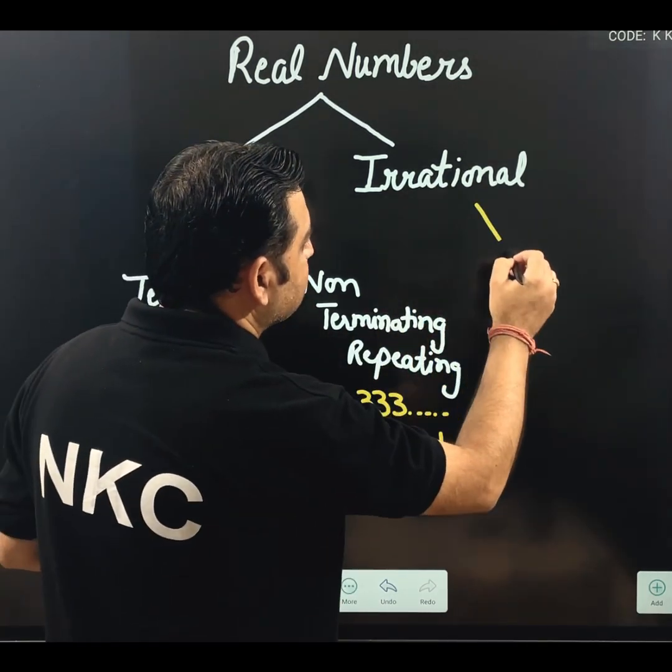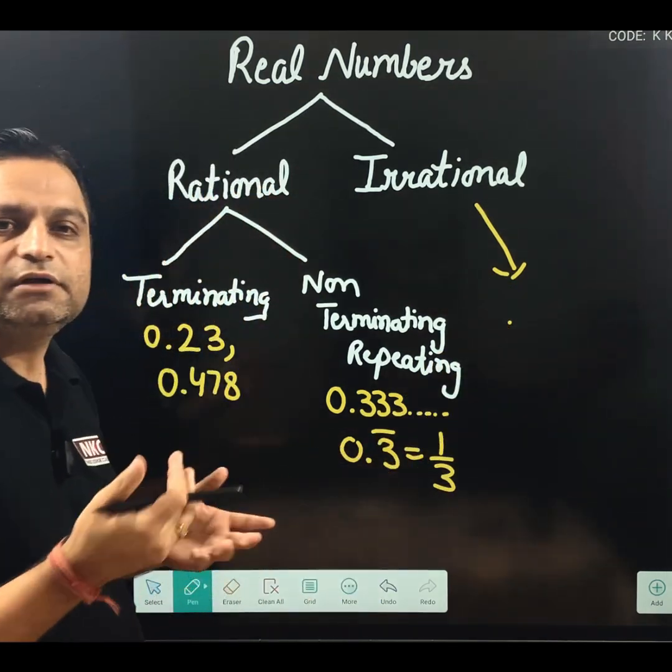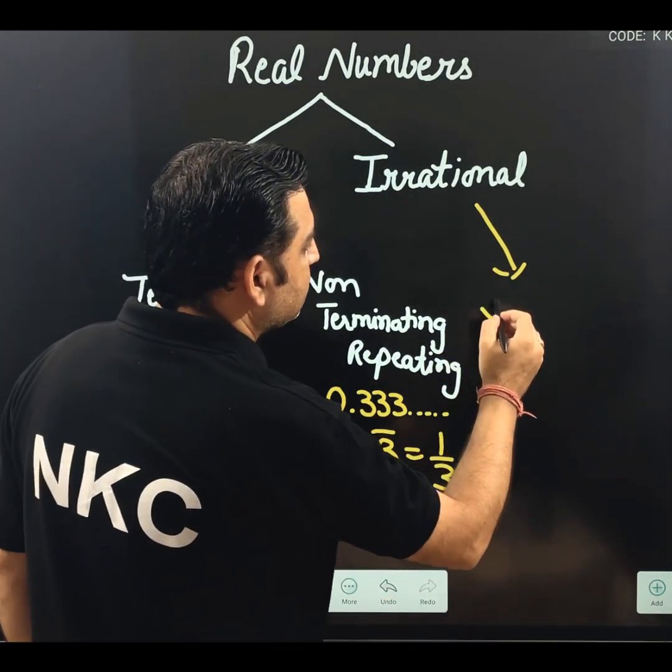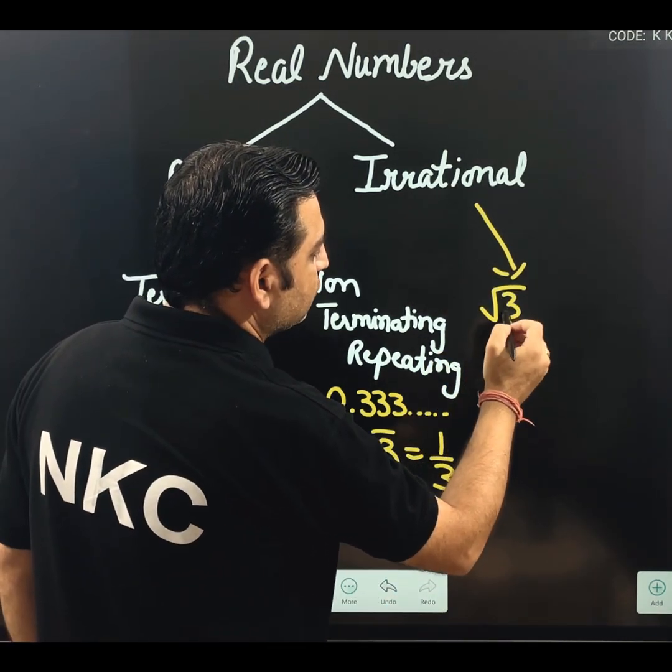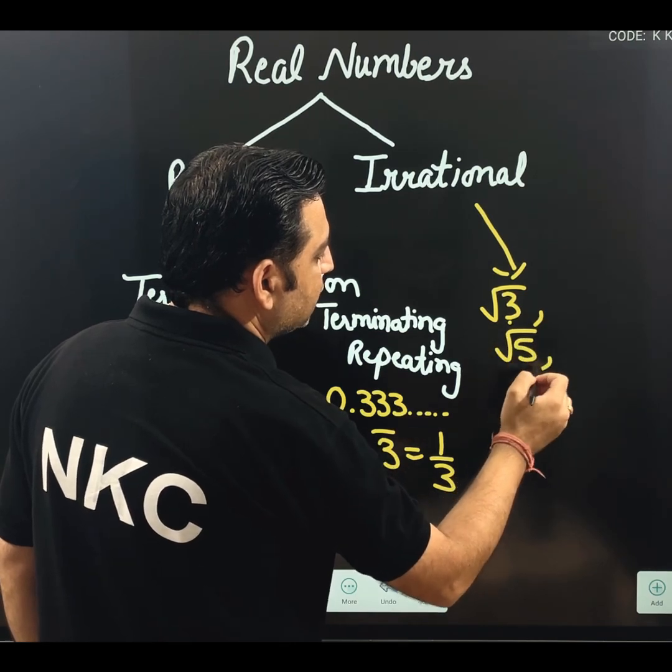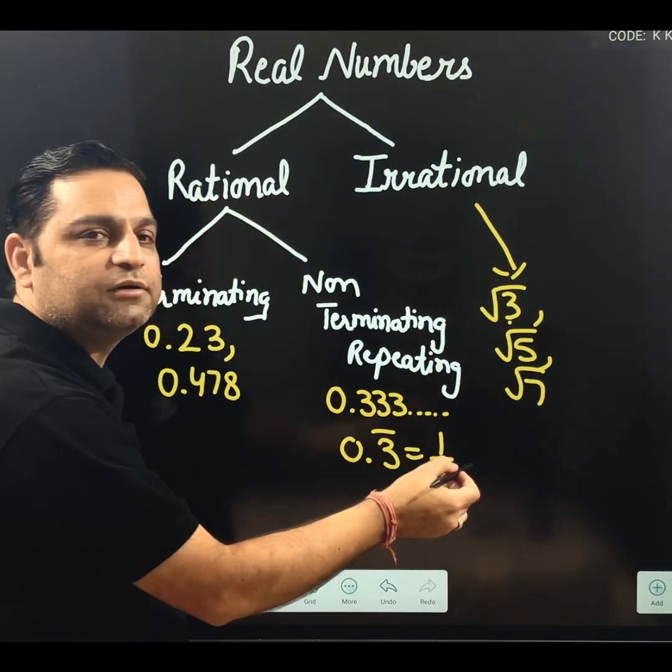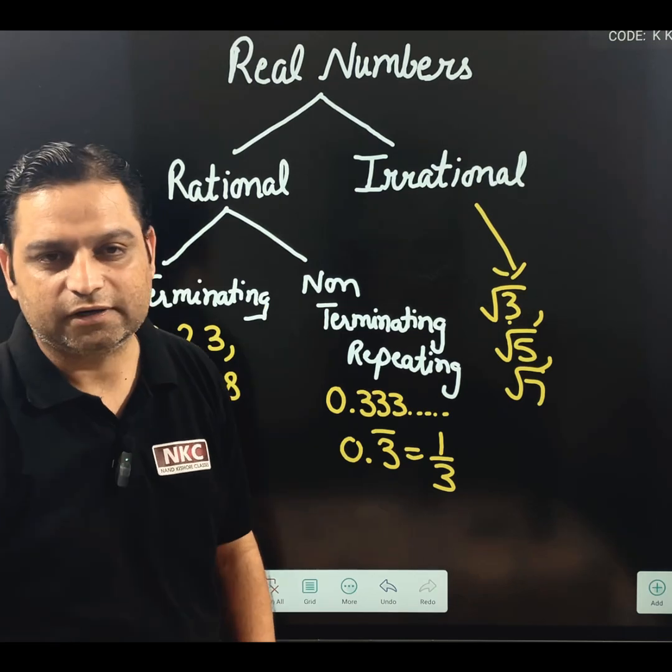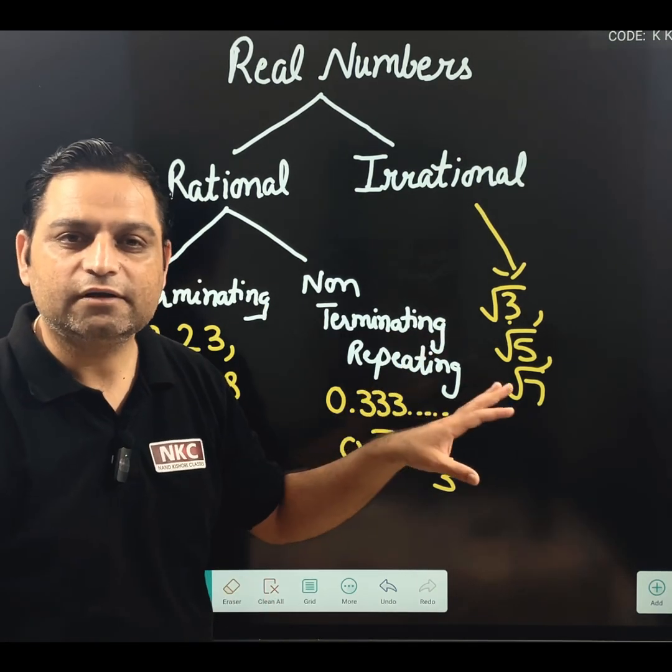Now, then what are irrational? For easy understanding, if I will tell you, irrational numbers are like, which are in roots, like square root of 3, square root of 5. These are the most common examples, students very easily understand it. Which comes under irrational.